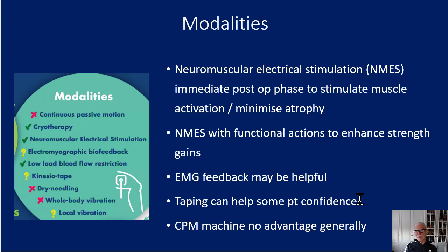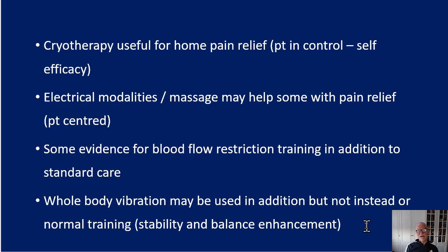Bracing isn't 100% necessary but could enhance rest; taping could be used if it helps temporarily. Continuous passive motion was once thought to give a better result by stressing the ligament — nowadays we know the result isn't better and that simply sitting, standing, and moving around stresses the ligament sufficiently. Blood flow restriction and body vibration may be used in elite sport — if a vibration plate is available it could be useful — but they're not essential.